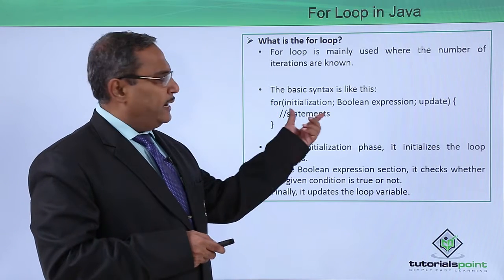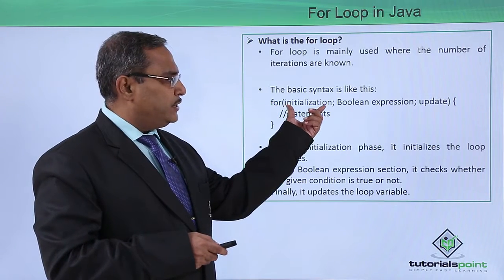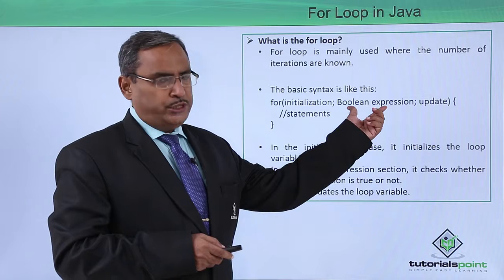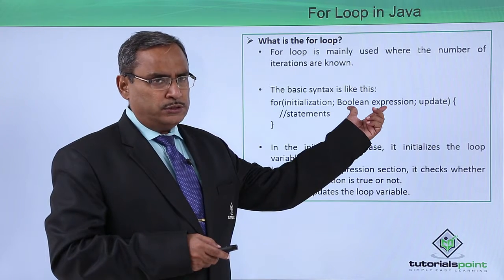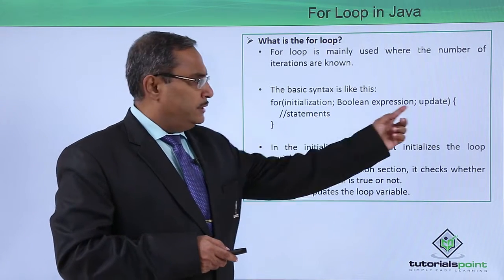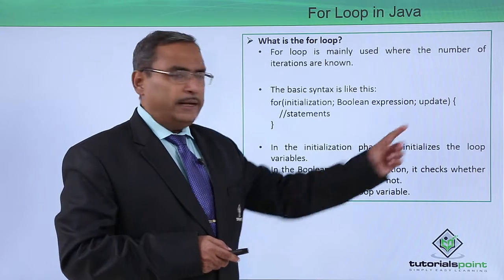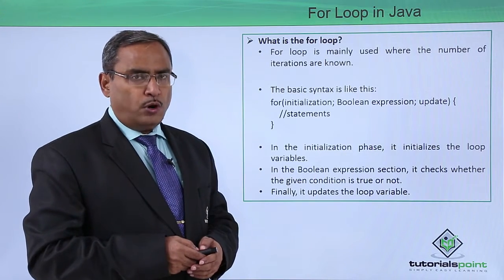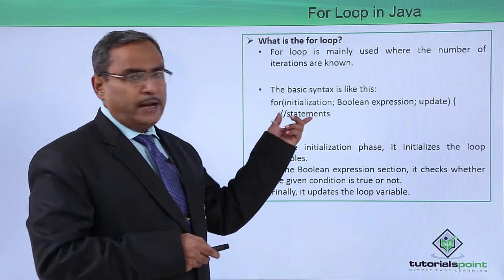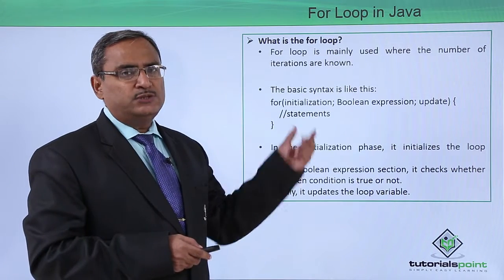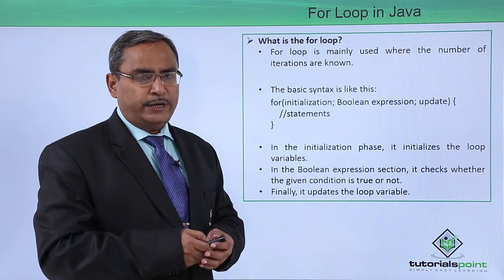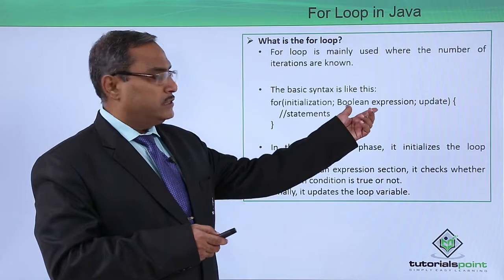The basic syntax is: for, then we have the initialization code, then a boolean expression which can return either true or false — these are separated by semicolons — then the update of the loop control variable. Within curly braces, we write the statements which are under the for loop, to be executed when the condition is true.